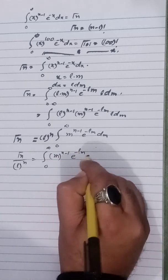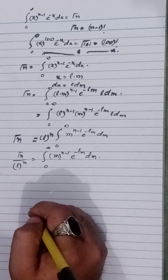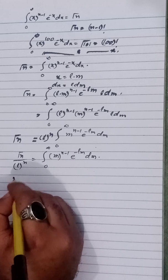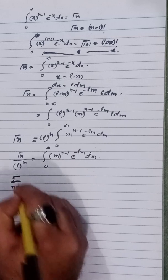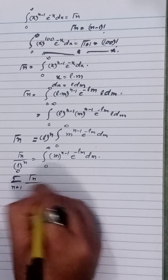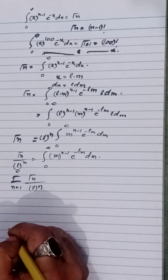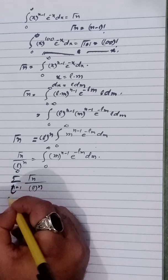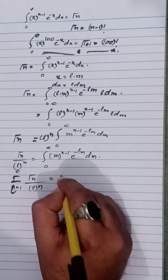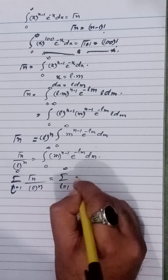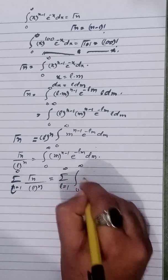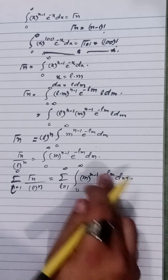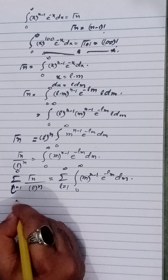Now taking the summation as l varies from one to infinity on both sides, we get the summation over l from 1 to ∞ of Γ(n)/l^n equals the summation over l from 1 to ∞ of ∫₀^∞ m^(n-1) e^(-lm) dm. Since l is a dummy variable, this equals Γ(n) times the summation over l from 1 to ∞ of 1/l^n.